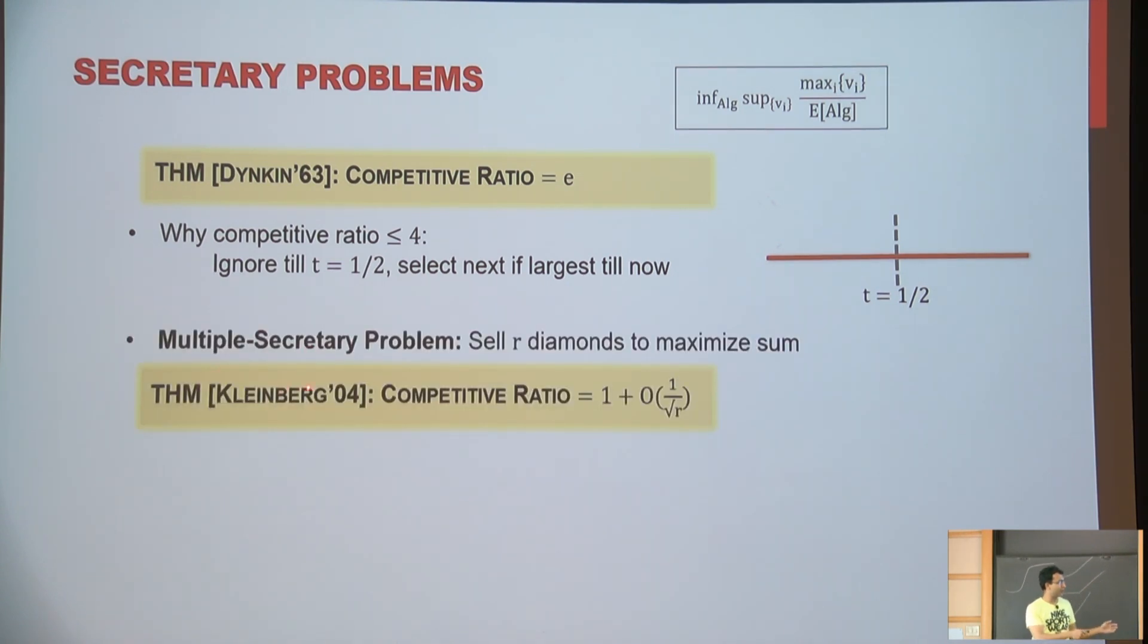Now, I can ask you more general versions of these problems. What if I'm selecting, rather than selling one diamond, I'm selling R diamonds. So these are all identical diamonds. So your goal is to maximize the sum of the values of the buyers, R values. And what's known here is actually this competitive ratio goes to one, pretty much, and it scales down as one over root R for this dependency. So this was shown by Kleinberg.